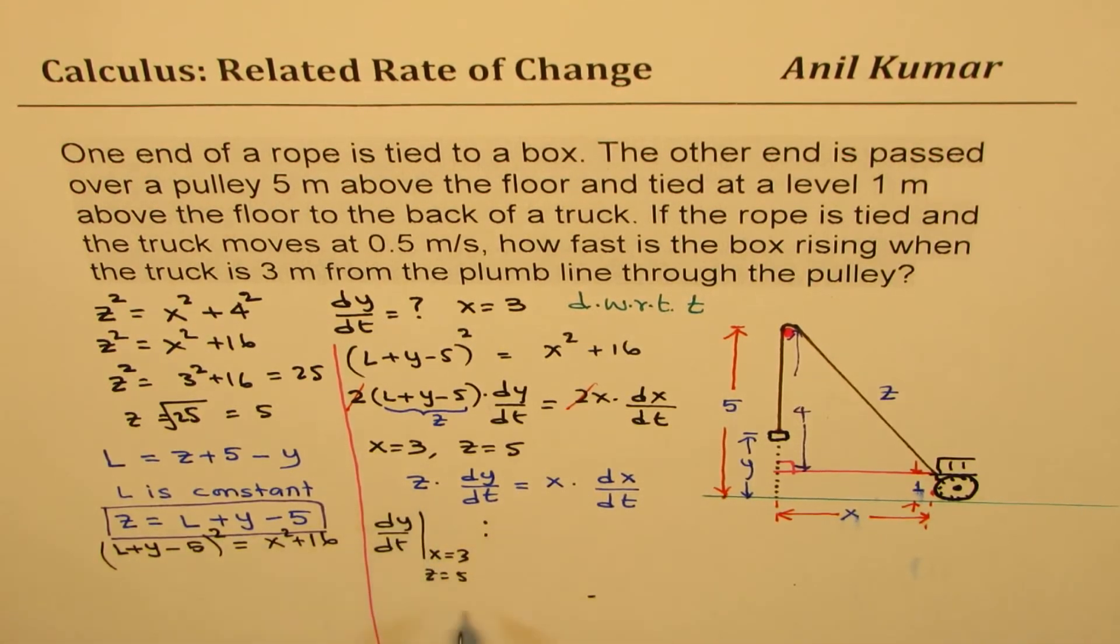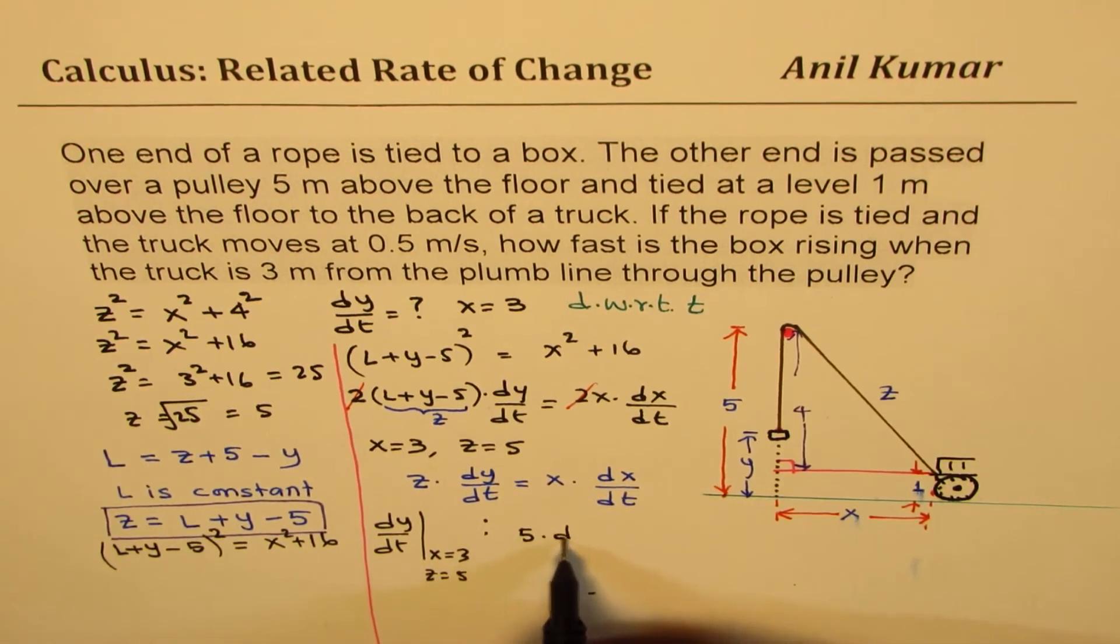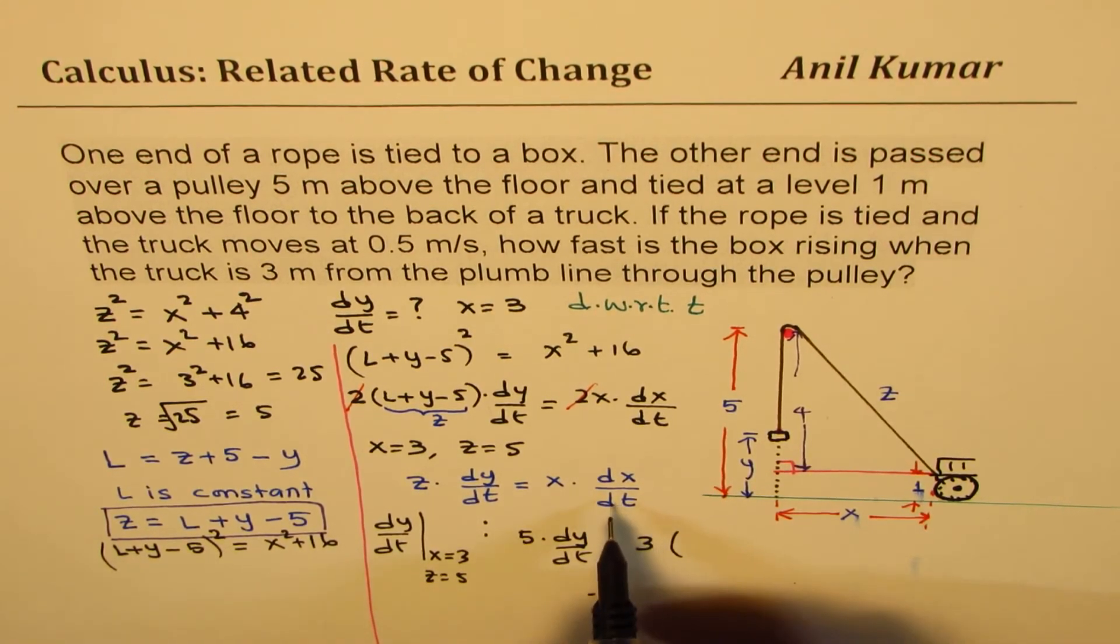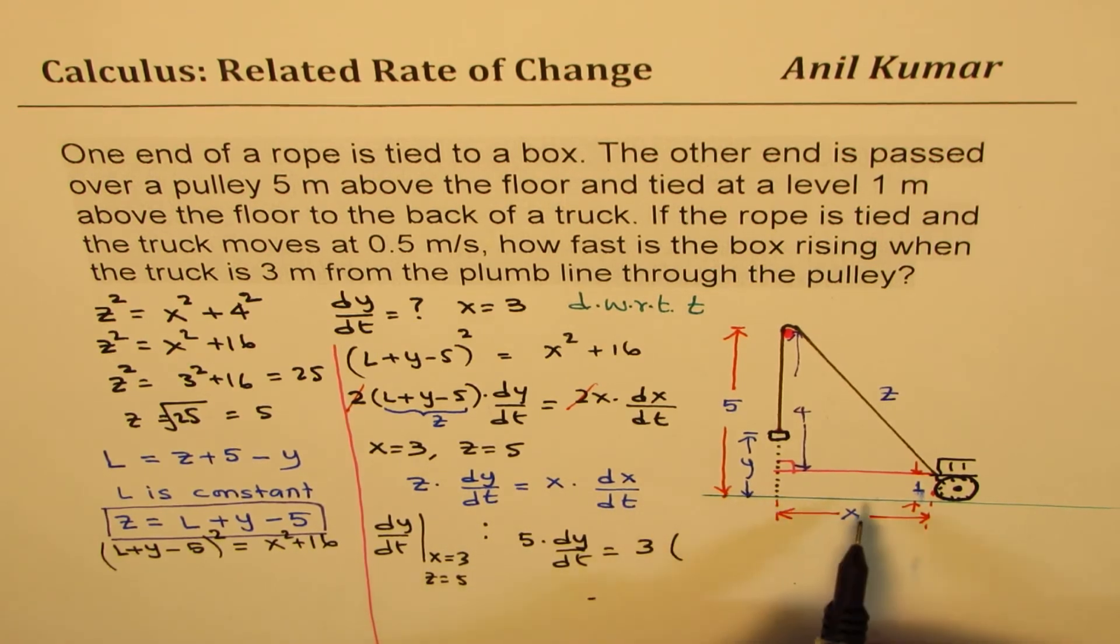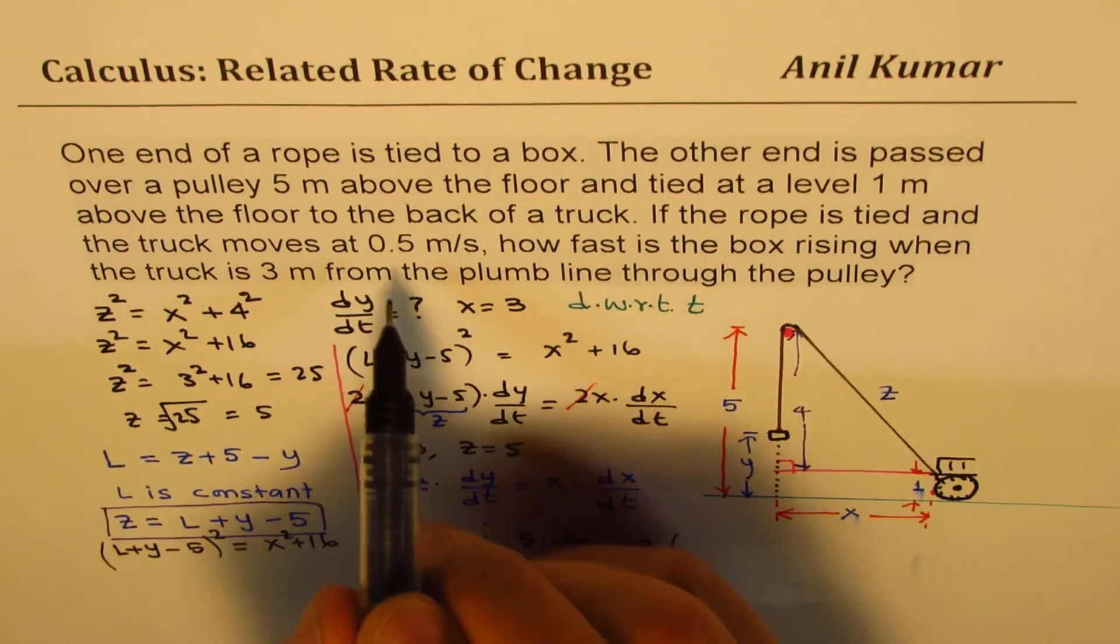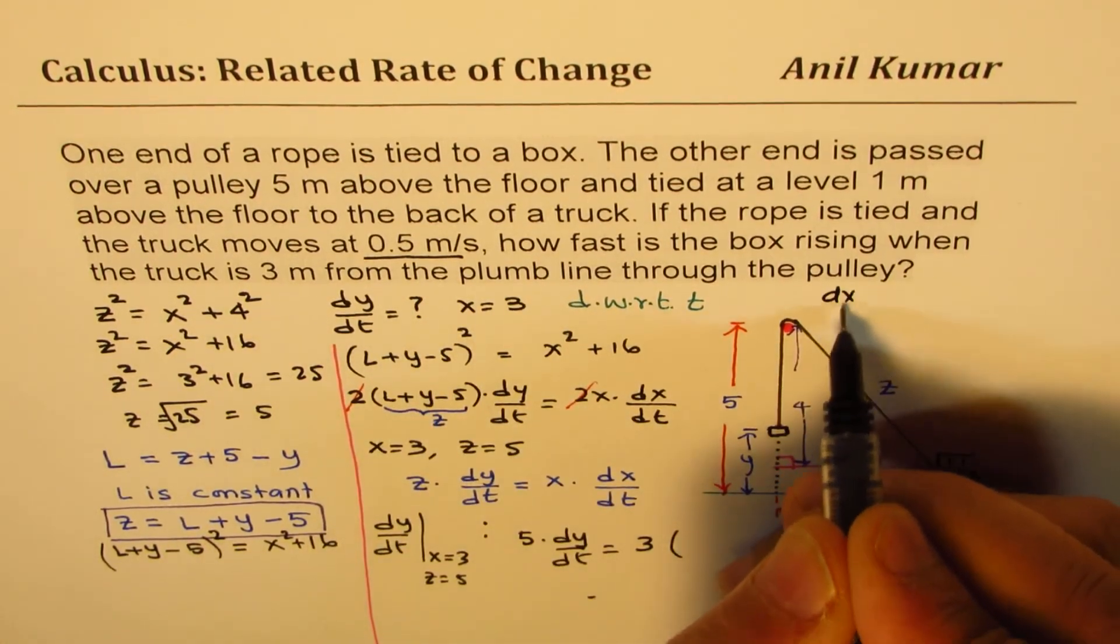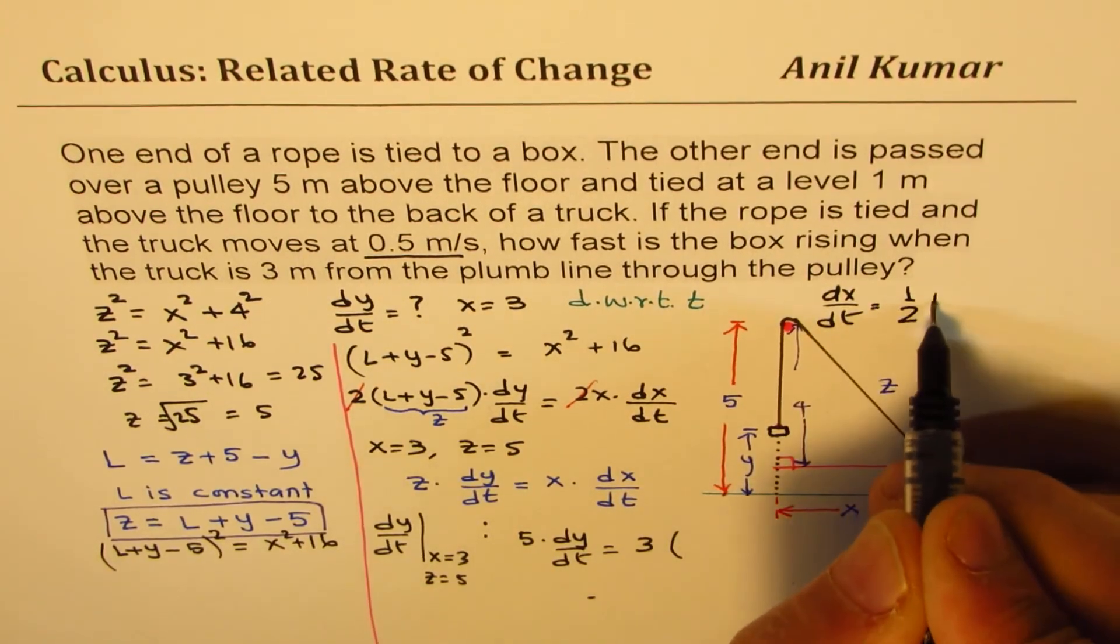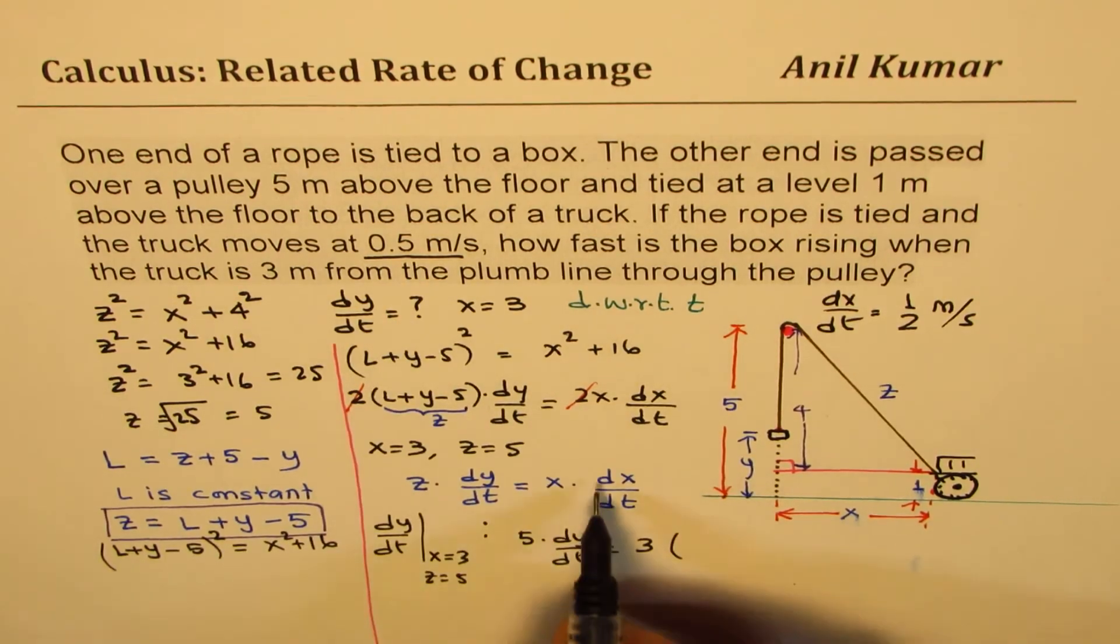So we are going to substitute 5 for Z. So we have 5 times dy/dt equals X is 3 times dx/dt. And dx/dt is speed with which the truck is moving, which is 0.5 meters per second. I should have written right there. dx/dt equals 0.5 or half meters per second. That is given to us.